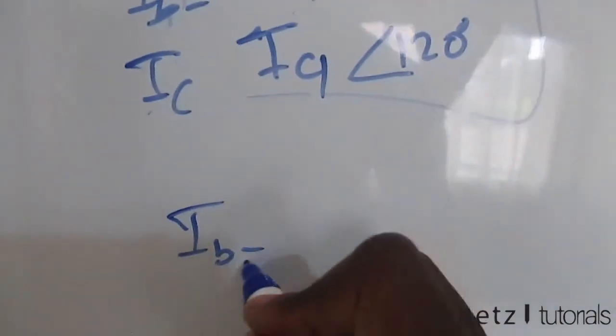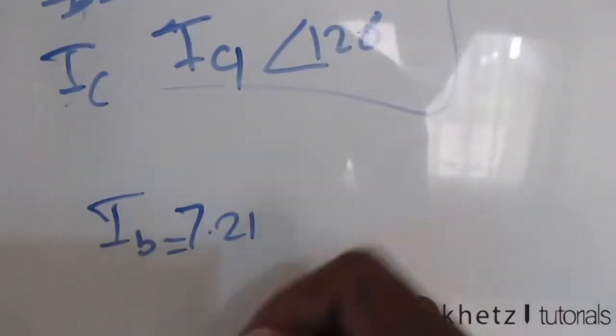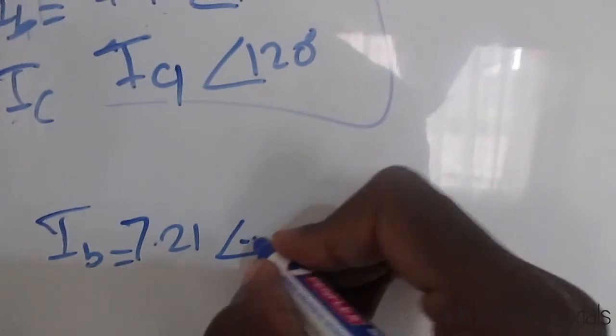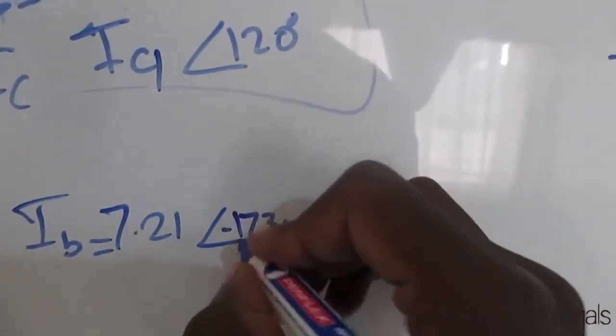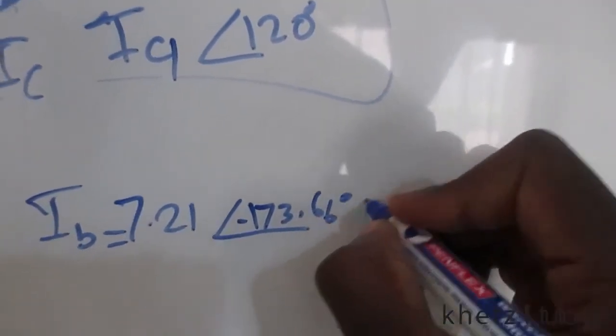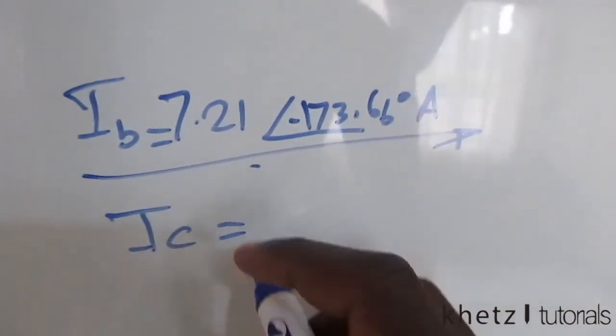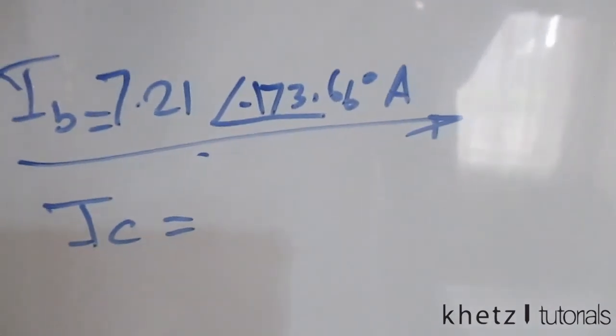Now that is the value of IA, but we now said IB could be the same value but with an angle which is 120 degrees less, and the result of that would be 173.66° in the negative direction. That would be your IB.